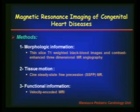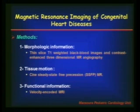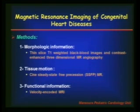To obtain morphologic information, we use thin-slice T1-weighted black blood images and contrast-enhanced three-dimensional MR angiography. For tissue motion, we use steady-state free precession, or the white blood technique. For functional information, we use the velocity-encoded MRI technique.